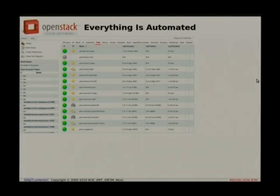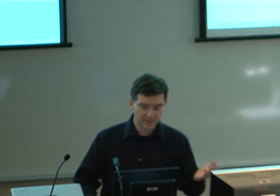Everything that we do is automated. Here's a screenshot of our Jenkins gating jobs — these are just a few of them, and it goes on quite a bit. We have 450 jobs in Jenkins total. Most developers interact with Jenkins through Gerrit, where feedback on changes is left, rather than looking at the Jenkins screen much anymore.